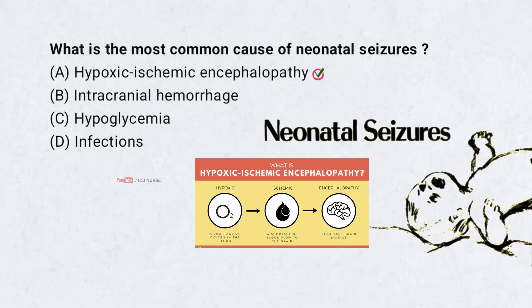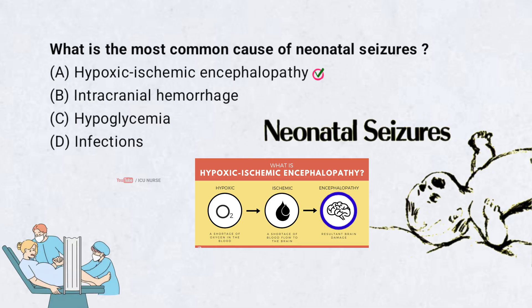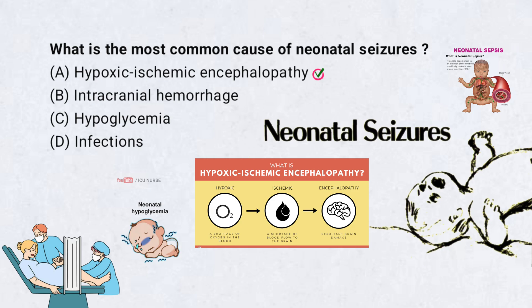Hypoxic ischemic encephalopathy is the most common cause of seizures in neonates. It occurs due to reduced oxygen or blood flow to the brain, usually around the time of birth. This condition can lead to brain injury, which makes the newborn more likely to have seizures. Other causes like hypoglycemia or infections are also important but less common. Early recognition and treatment are crucial to prevent long-term complications.